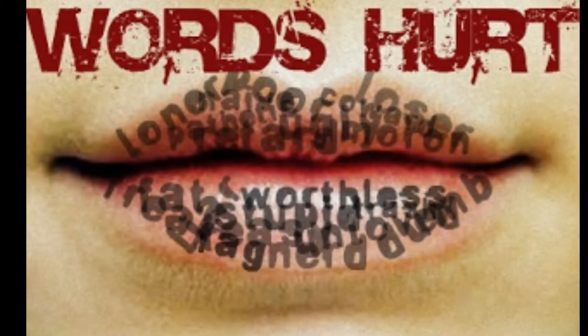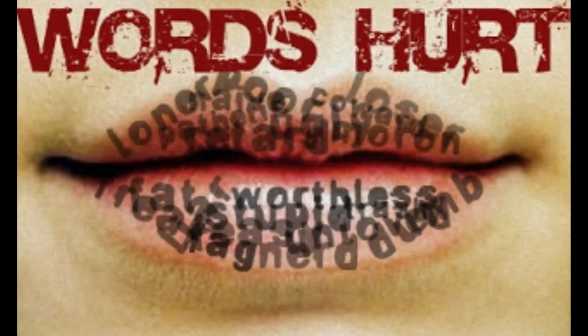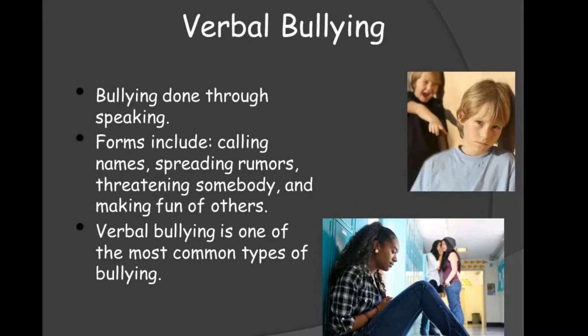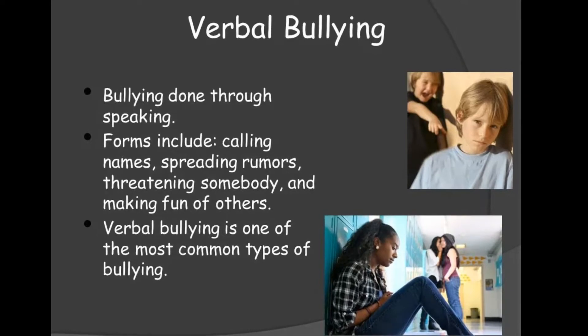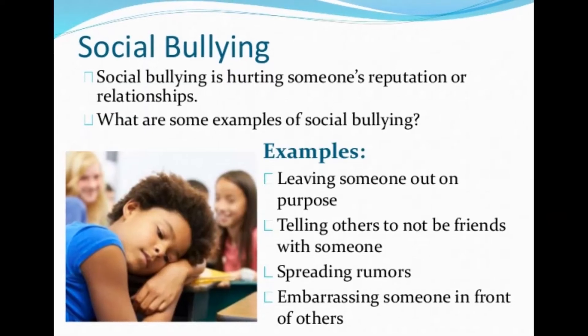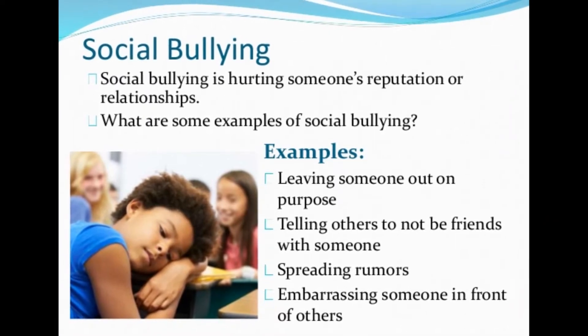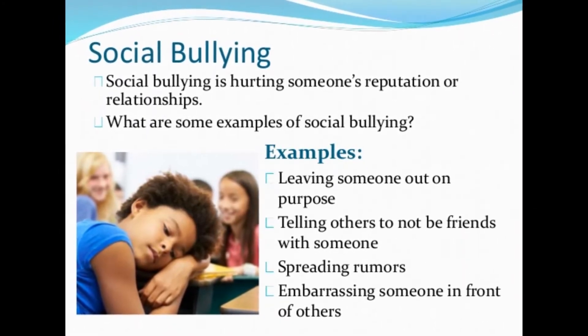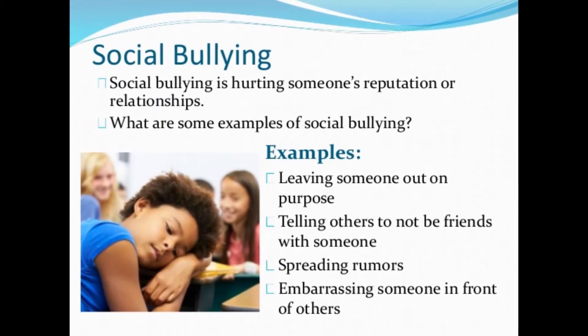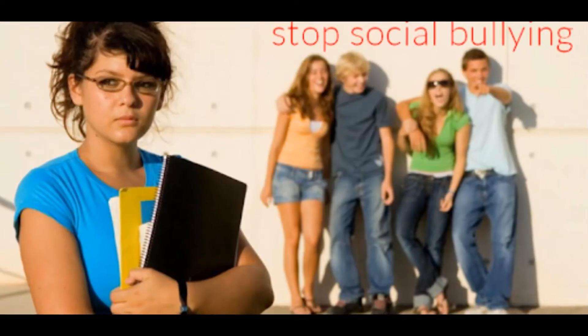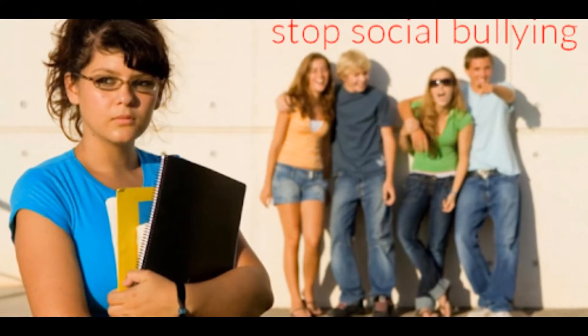Verbal bullying is saying or writing mean things. It can include teasing, name-calling, inappropriate sexual comments, taunting, and threatening to cause harm. Social bullying, sometimes referred to as relational bullying, includes hurting someone's reputation or relationships. It can include leaving someone out on purpose, telling others not to be friends with someone, spreading rumors, and embarrassing someone in public.